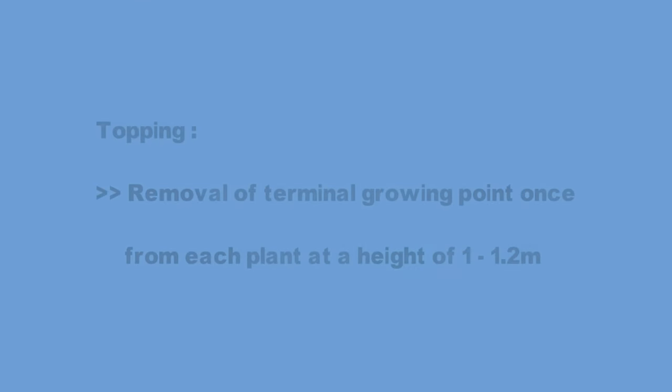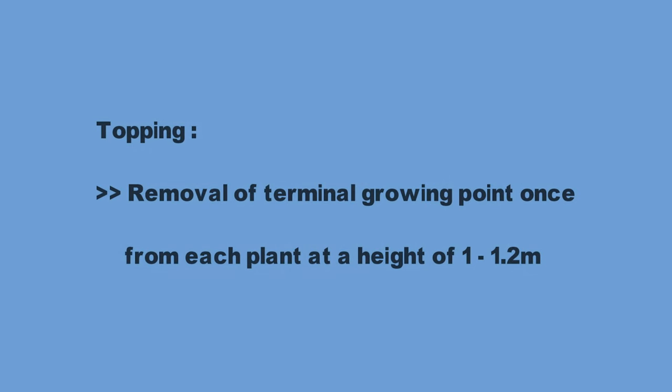Topping is the removal of the terminal growing point once from each plant at a height of 1 to 1.5 meters to prevent further terminal growth, encourage lateral branching, good boll development, and to divert the energy flow. This process is also called topping.